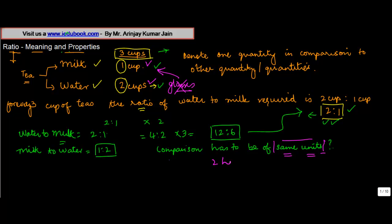If they are not same then you have to convert them into equivalent thing. So let's say if you were to compare two hours with 30 minutes, this is not correct. You have to first convert these hours into minutes, so two hours can be written as 120 minutes and then these can be compared with 30 minutes and then the comparison or the ratio of these two times will be fine.